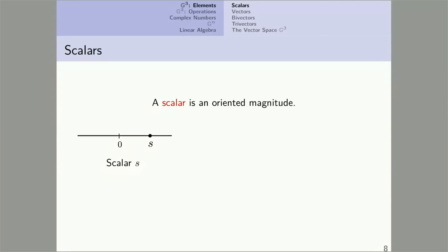Scalars. A scalar is an oriented magnitude. I plotted the scalar S on the real line. A scalar has a size, its absolute value, and it has an orientation. It can be bigger than zero or less than zero. No orientation is assigned to the scalar zero. Now scalars are found in R3. They multiply vectors. Scalar multiplication. But scalars are not elements of R3. The only elements of R3 are its vectors.